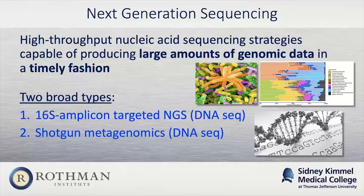There are two broad types. The first is 16S amplicon targeted NGS, which is what's actually done at Microgen. The second is shotgun metagenomics, which is being done at a group at Mayo and also in Oxford, as well as a couple of Chinese groups.